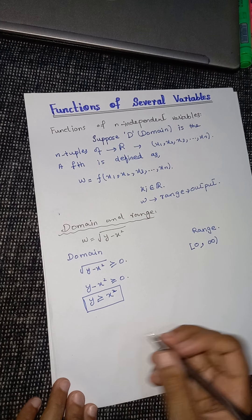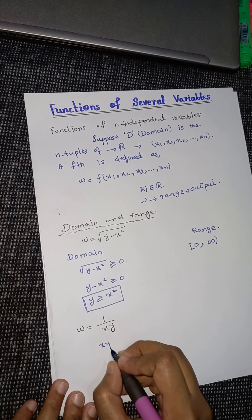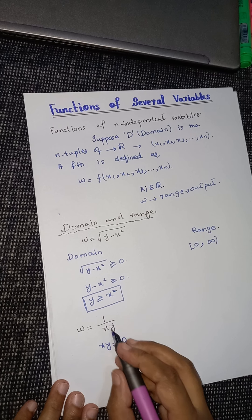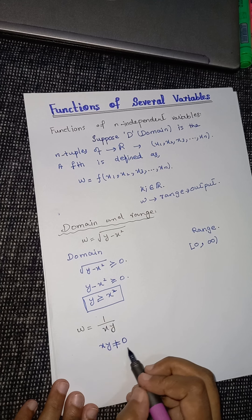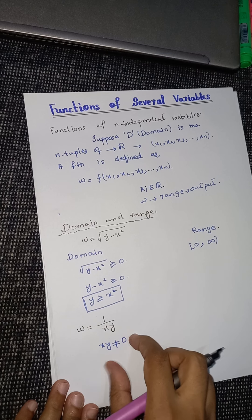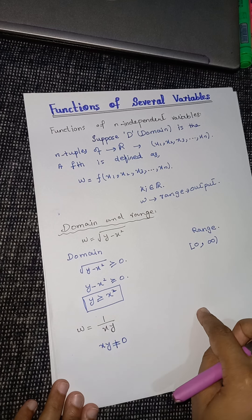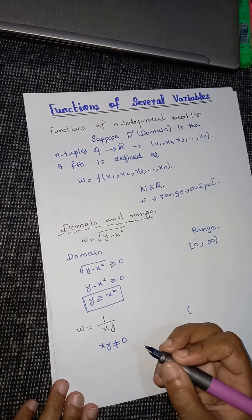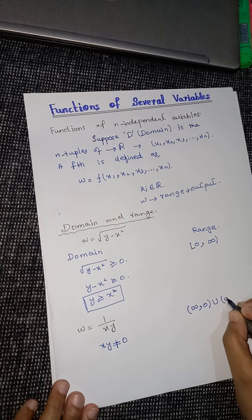Now if we talk about another function, w = 1/(xy), we can clearly see that xy should not be equal to 0. The reason is that if xy equals 0, we get the form something over 0 and it would be infinite — this is the point of singularity. So x ≠ 0 and y ≠ 0. That's why the range would not include 0, because we cannot substitute 0. We can go near to 0 but we will not get 0.